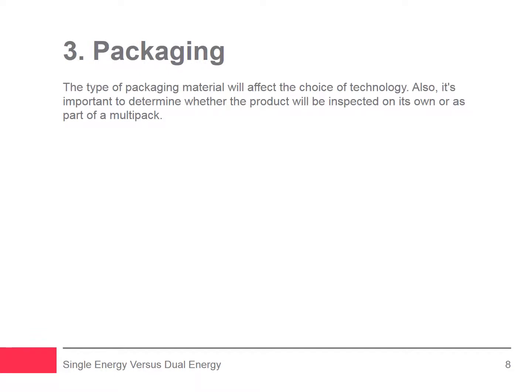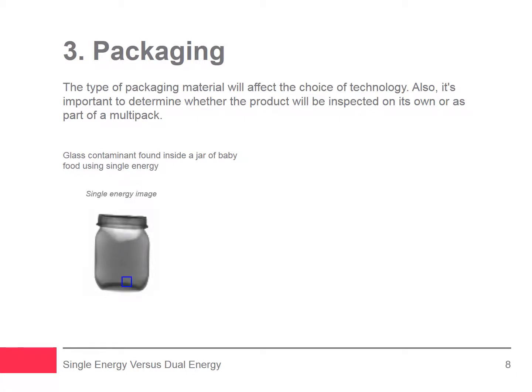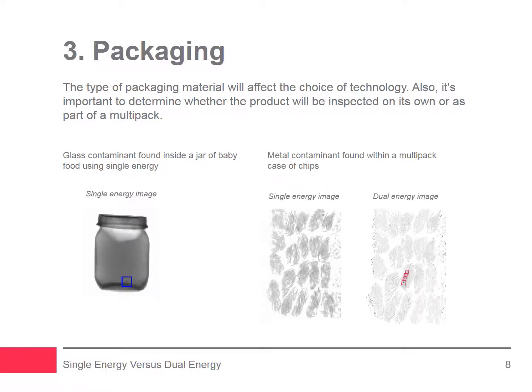Single energy technology is ideal for inspecting unpackaged products as well as products in a wide variety of packaging types such as tall rigid containers, cartons or boxes, pouches, bags or sacks, trays, and tubes. Single energy technology is ideal for inspecting a glass jar of jelly or baby food where the likely contaminant is glass. Dual energy technology is capable of detecting inorganic contaminants in a variety of packaged products and also lends itself to detecting contaminants in innovative packaging designs such as fold-out cardboard sandwich packaging and corrugated card encasements that can plague traditional inspection tools. Dual energy is ideal for inspecting multi-pack cases of chips, as the technology essentially removes the edges of individual packages, making it easier to see any large, typically metal contaminants that could potentially be hiding inside a box.